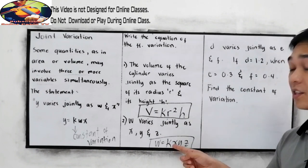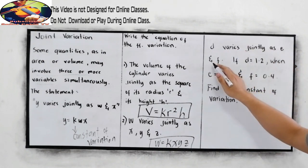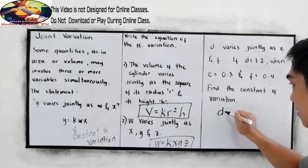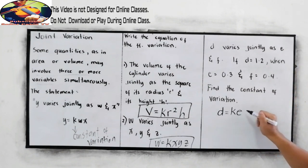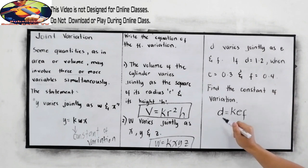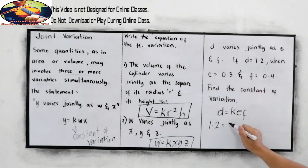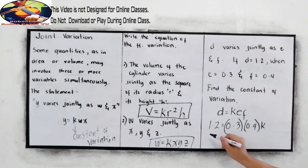Now, how are we going to find the constant of variation? Let's have this problem. d varies jointly as e and f. So let us write the equation: d equals k times e times f. If d is equal to 1.2 when e is equal to 0.3 and f is 0.4, we have 1.2 equals k times 0.3 times 0.4.